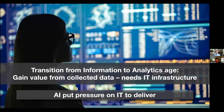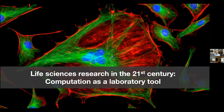We've transitioned away from the information age — the collection of data — to the analytics age, where we actually have to gain value from collected data. That needs a lot of IT infrastructure, and the AI revolution has put pressure on IT in science organizations to deliver really good solutions. Life sciences computing needs have changed: research in the 21st century requires computation as a laboratory tool. The data center has essentially become a laboratory tool, just like a microscope or a sequencer — you really cannot do modern science without advanced computing.